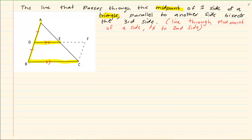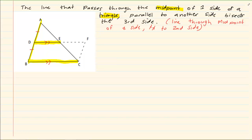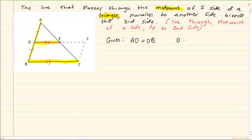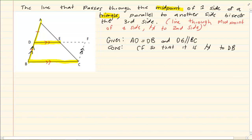If it is parallel, then it will bisect the remaining side. We are given that AD is equal to DB, and we are given that DE is parallel to BC. Now we are constructing CF so that it is parallel to DB, and we are also constructing EF.